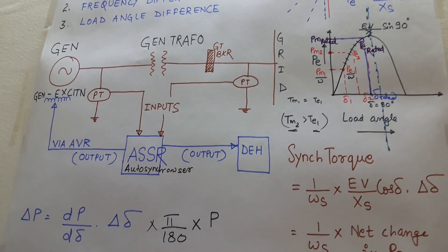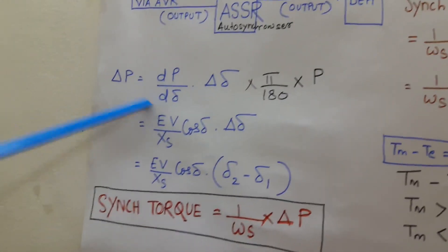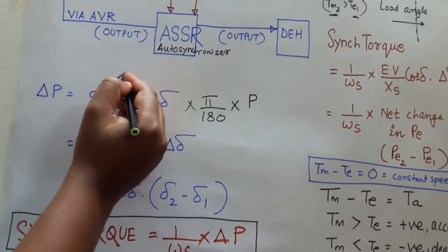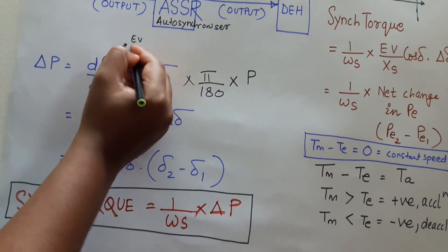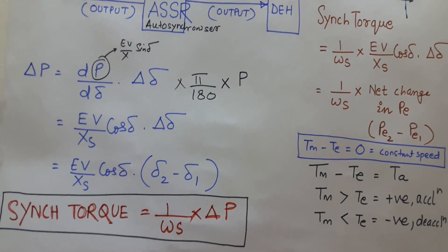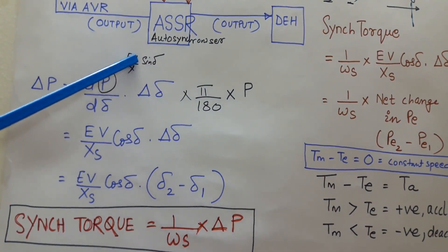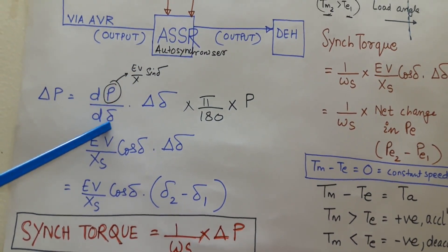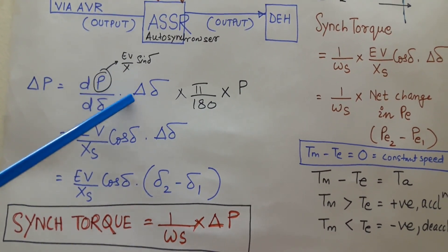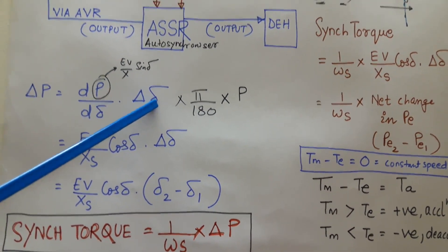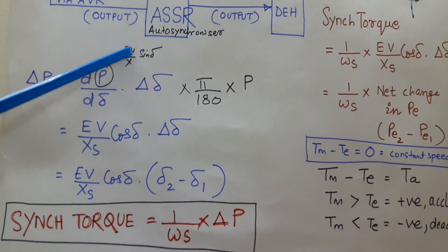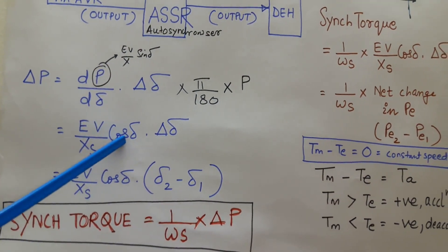How we will derive? I have shown. We know that P is equal to EV by X sine delta. So if I will take the derivative of P with respect to delta and I will multiply this whole derivative with the change in load angle, I will get the change in power which is synchronizing power. So what is derivative of EV by X sine delta? It is EV by X cos delta.